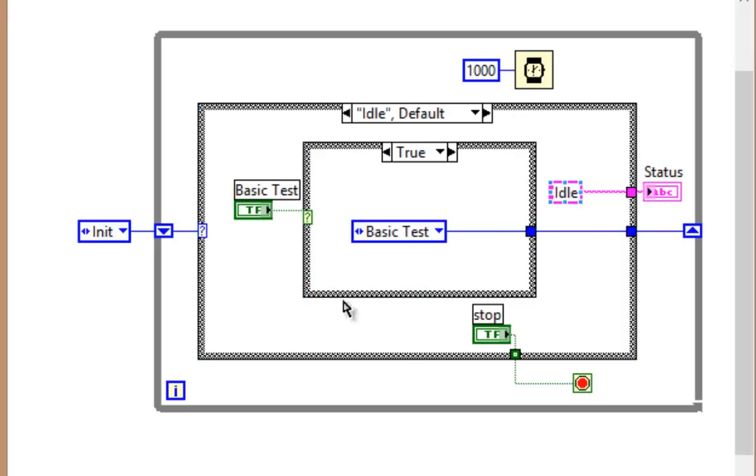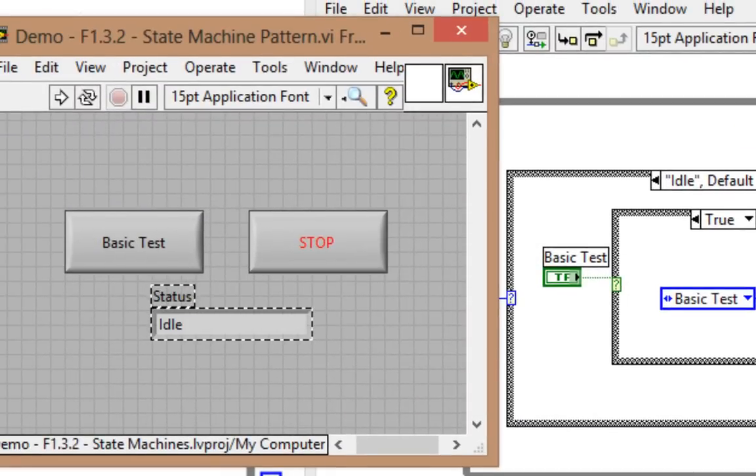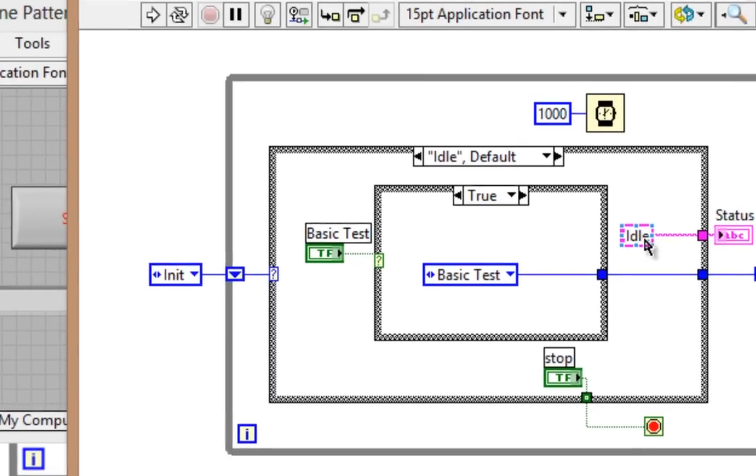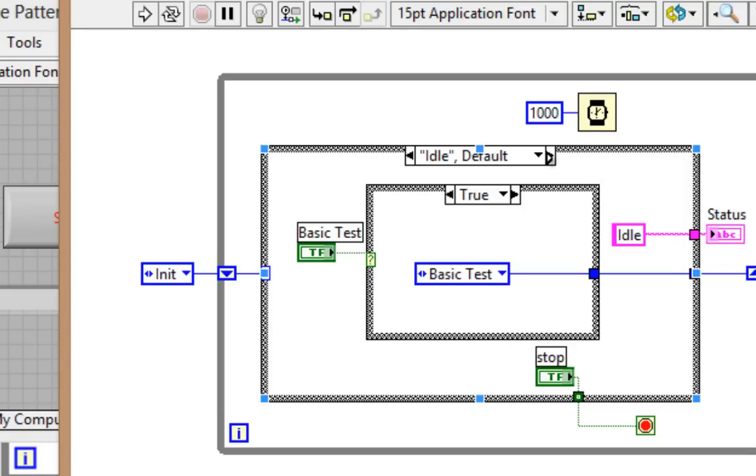In idle, as we see, we're pulling the basic test boolean and the stop boolean. Now in both cases, you see that we're also updating the status on the front panel, so the user knows which state we're in, just with a string: idle or initialize.